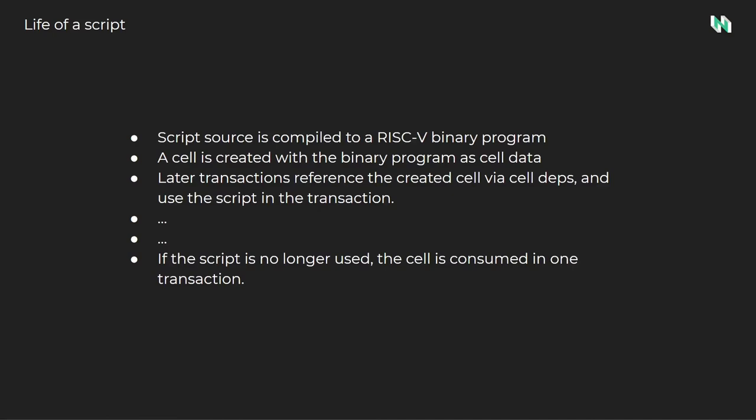The last step in the lifecycle is the optional process of consumption. If the script is no longer needed or is being replaced by a newer version, the developer can consume the cell to reclaim the CK bytes used to store the data. If a widely used resource is deployed, it can be made permanent by setting the lock script argument to all zeros — similar to burning on other blockchains. No one possesses a private key that will unlock this cell, so no one can consume it in the future.